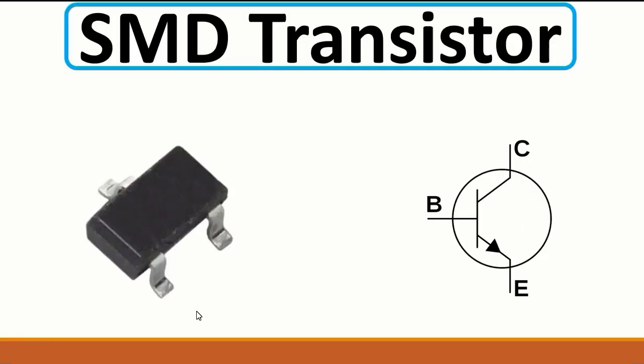The next component is the SMD transistor. This is a three-pin component — we have base, collector, and emitter. The base is exactly like the gate for the MOSFET. When the base receives a control signal, current or voltage passes from collector to emitter or emitter to collector, depending on whether it is a PNP or NPN transistor.